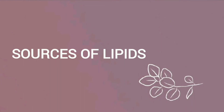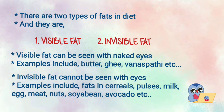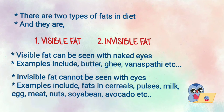Next, sources of fat. There are two types of fats in the diet: visible fat and invisible fat. Visible fat can be seen with our naked eyes; examples include butter, ghee, vanaspati, etc. Invisible fat cannot be seen with our eyes; examples include fats in cereals, pulses, milk, egg, meat, etc.